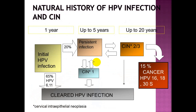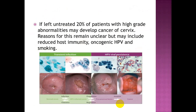Natural history of HPV infection and CIN: in about 1 year of initial HPV infection, approximately 20% progress over up to 5 years to persistent infection. About 65% clear the HPV infection. Of those with persistent infection, 16% progress or regress over up to 20 years into CIN 2 and 3, and about 15% develop cancer. If left untreated, 20% of patients with high-grade abnormalities may develop cancer of the cervix.